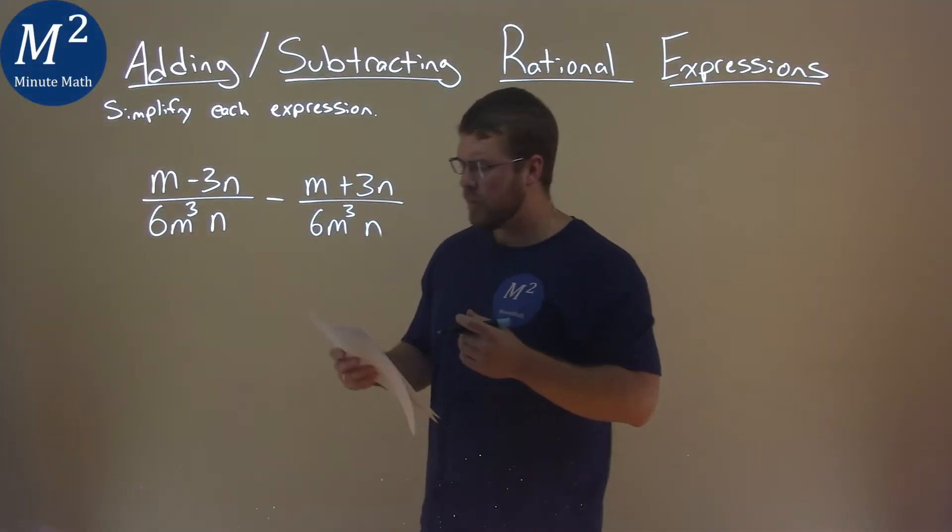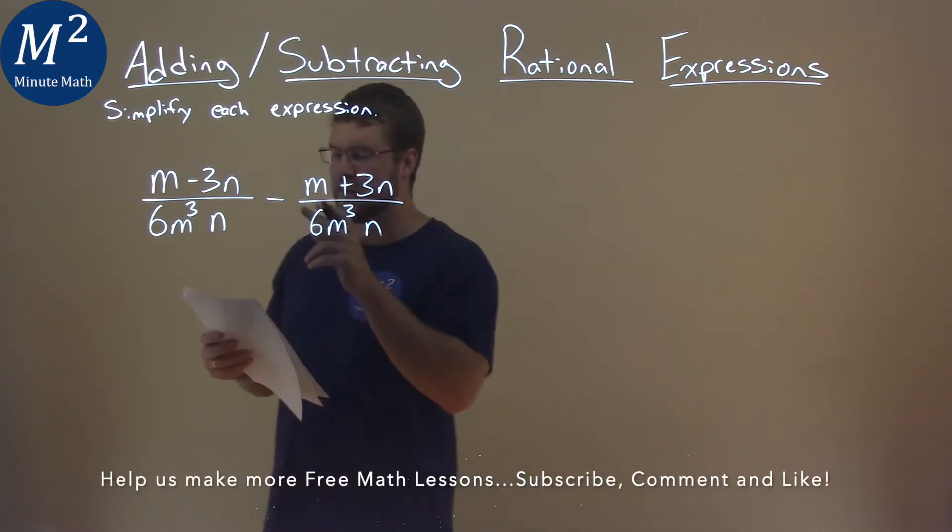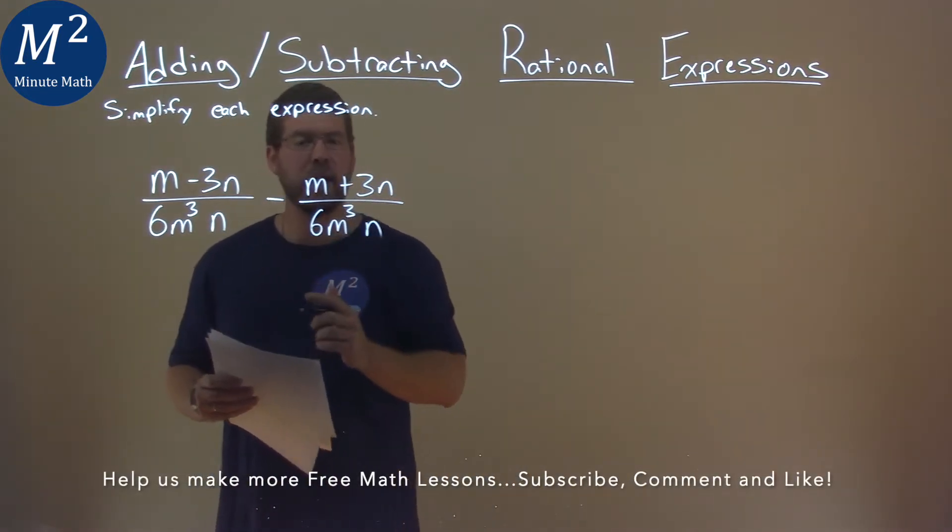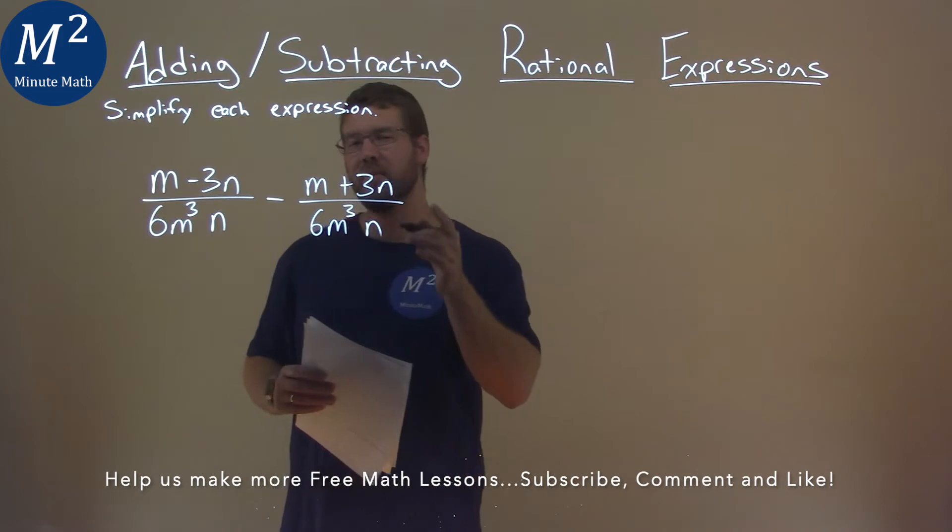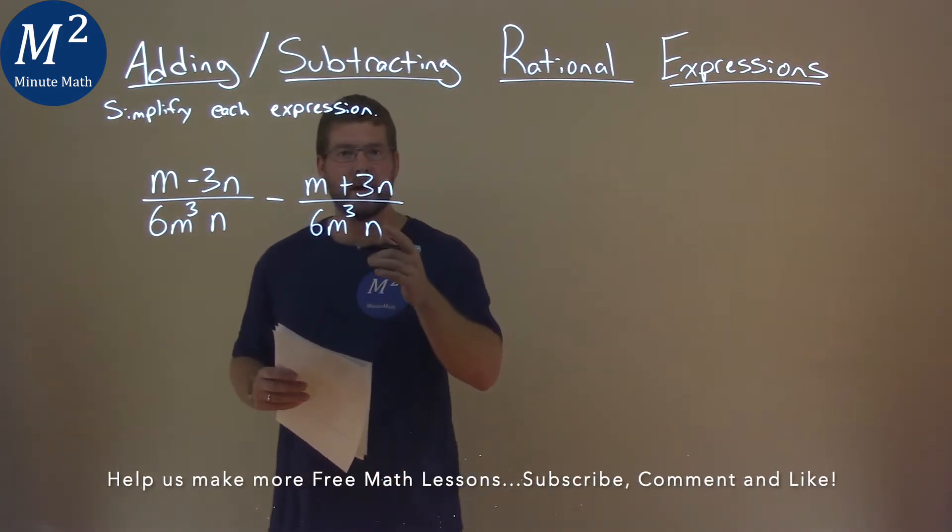We're given this problem right here: m minus 3n over 6m to the third power n minus m plus 3n over 6m to the third power n.